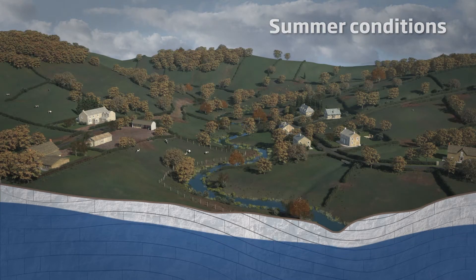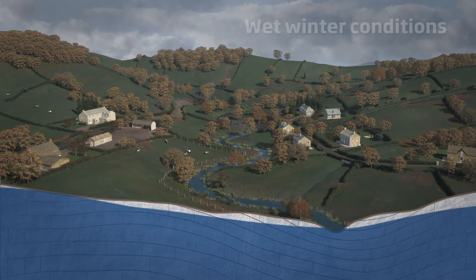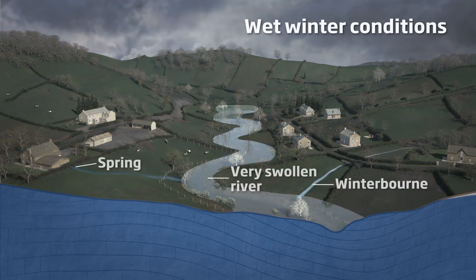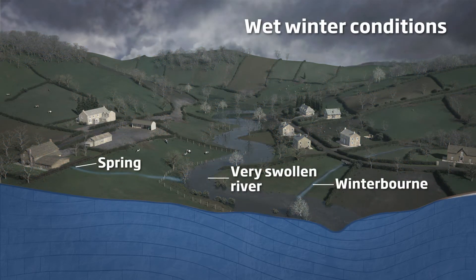In very wet winters, the prolonged heavy rainfall can result in swollen rivers and even higher water tables, creating more springs which can last for several months.